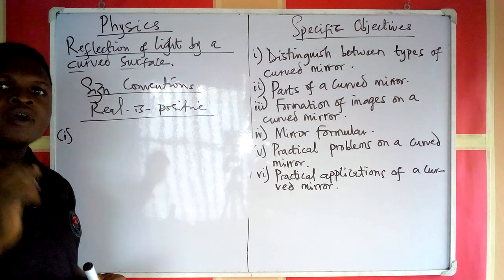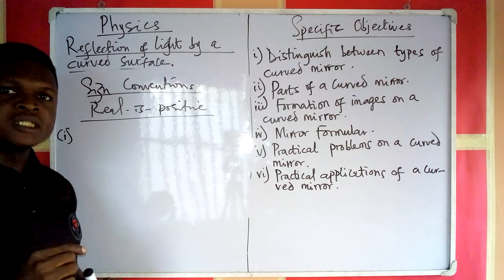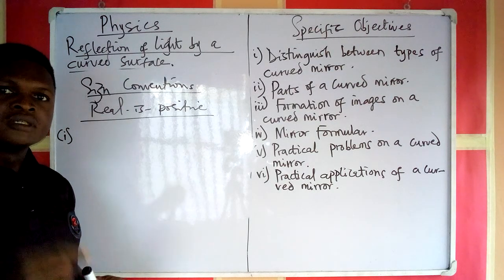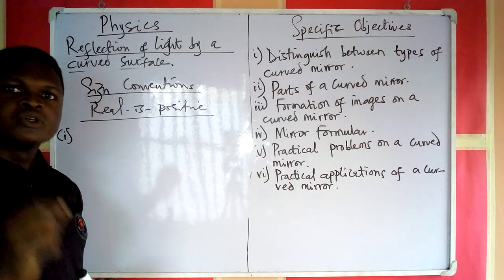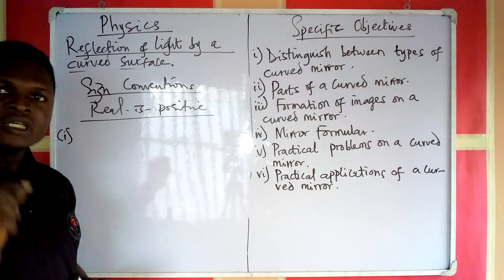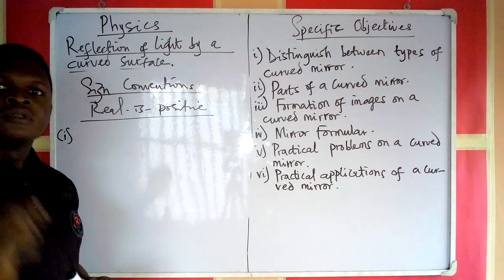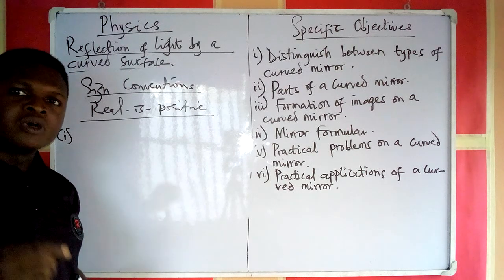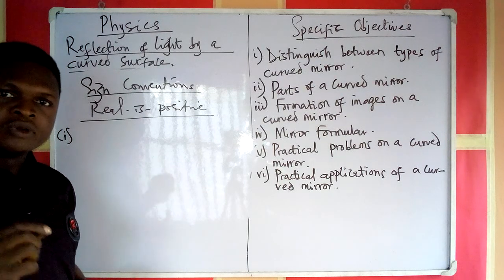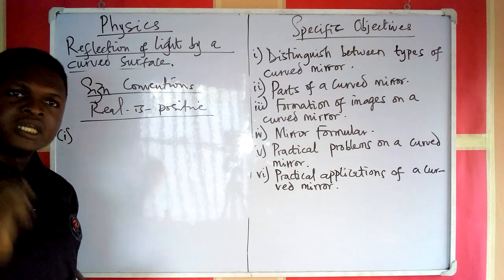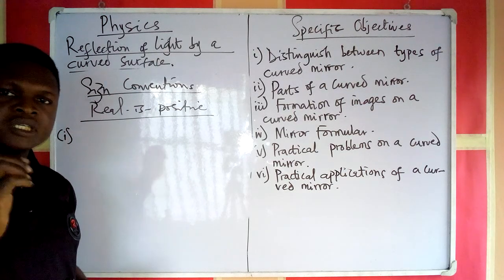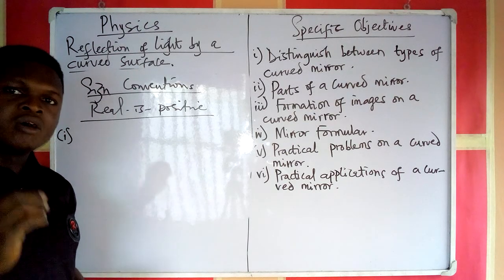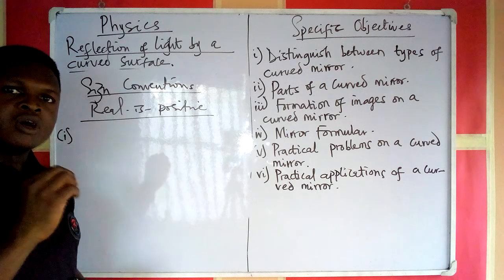Rule three — the focal length of a concave mirror is positive. Remember that a concave mirror is the same as a converging mirror, so the focal length of a concave or converging mirror is taken to be positive. Rule four — the focal length of a convex mirror or diverging mirror is taken to be negative. These four rules are the rules of the real-is-positive sign convention, and are very important in solving problems under curved mirrors.